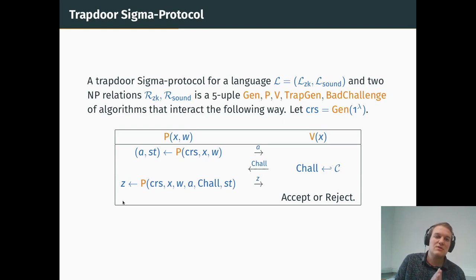What we want to build is a trapdoor sigma protocol for gap languages. So gap language, it's actually two languages, with L_sound being slightly bigger than L_ZK. And so you'll see that stuff that is done honestly belongs to L_ZK. But when we want to prove the soundness, we only prove that outside of L_sound, you cannot do false proofs. So we have some gap between what we can honestly prove and not honestly prove. Other than that, it is a sigma protocol, in the sense that we have a prover and a verifier. The prover computes a first statement, then the verifier returns a challenge, and the prover must respond to that challenge. Depending on this response, the verifier accepts or rejects.